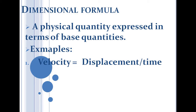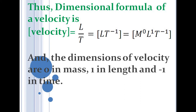Velocity is defined as displacement divided by time. The dimension of displacement is L and the dimension of time is T, so the dimensional formula of velocity is L T⁻¹. In general, dimensions involve mass, length, and time. Since velocity has no mass, we write it as M⁰ L¹ T⁻¹.